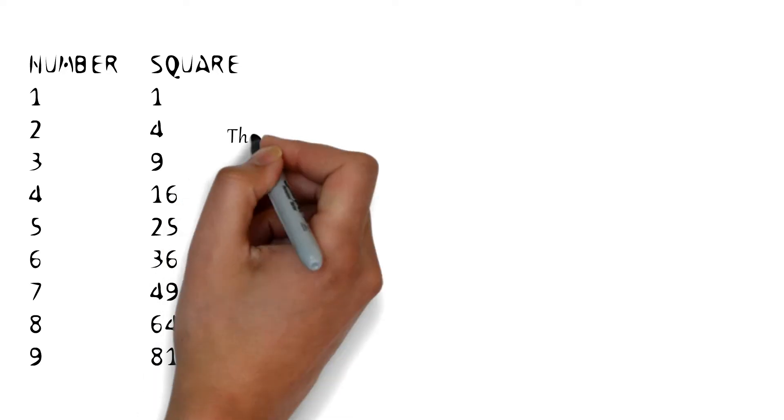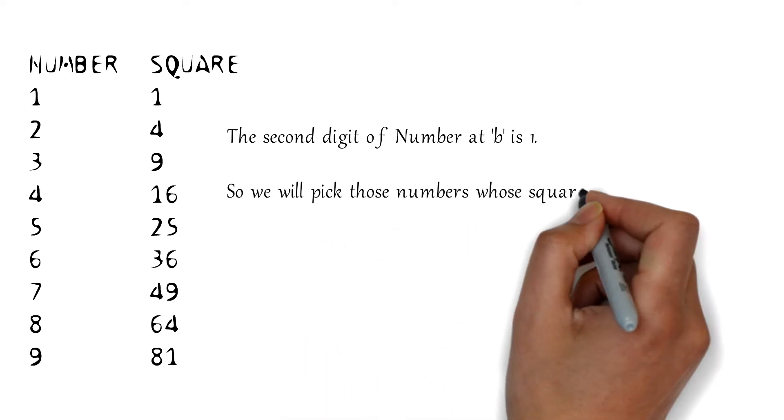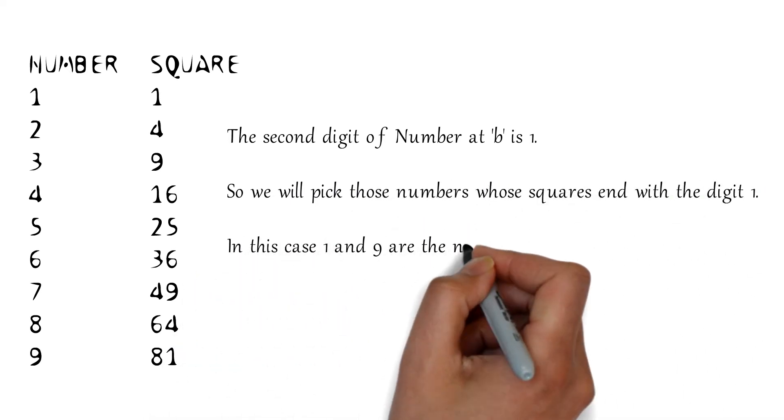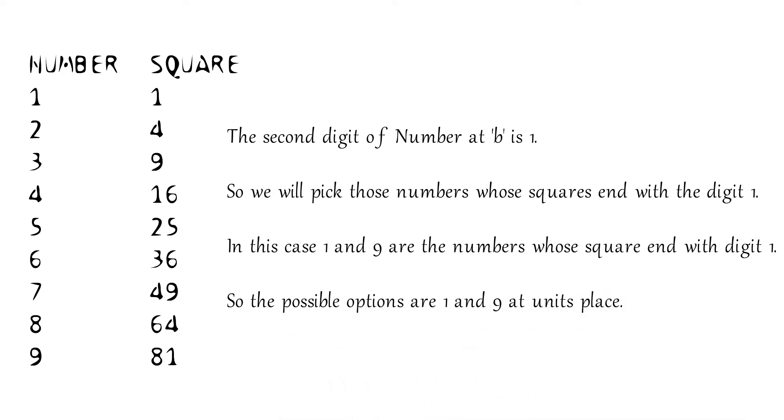Now for the digit at units place. I expect you guys to know the squares of numbers from 1 to 9. I have jotted them down for your convenience. The digit at the units place will be a number whose square ends with 1, as the last digit of part b is 1. From this list we can see that the squares of 1 and 9 end with 1.